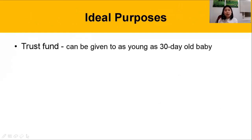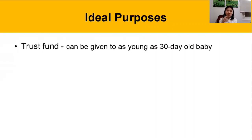Number one: trust fund. For those who have kids, a lot of people decide to get this plan for their children. Even as young as 30 days old, they can be insured. Just imagine — from zero years old until age 100, the child will receive the endowment from year 6 and every other year thereafter. It's already a great nest egg for your kids' future milestones.